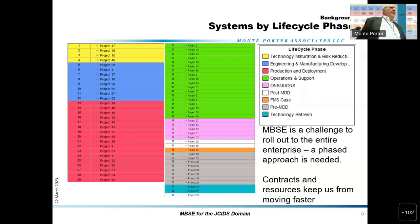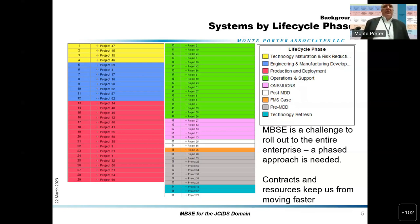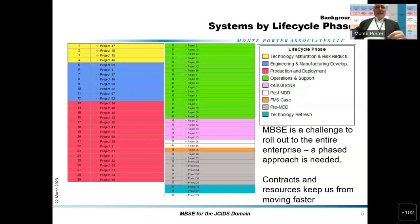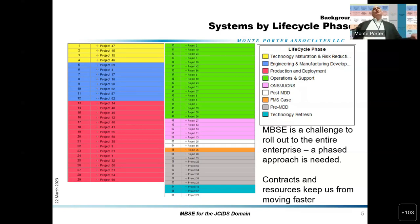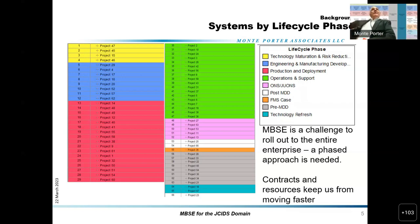At an enterprise level, rolling out to the entire enterprise is a challenge. You've got to have a phased approach — just like when we're changing software versions, we have to let them change when they're ready. Contracts and resources also keep us from moving faster. We'd be there by now if contracts weren't in place saying you will use software A or software B — and then the vendor comes along and says we need more money because you said version A. That's one of the challenges we've learned.